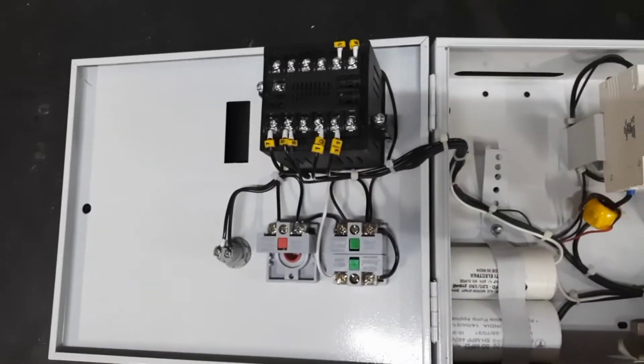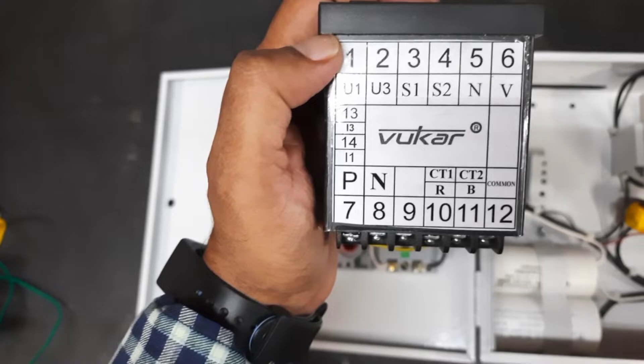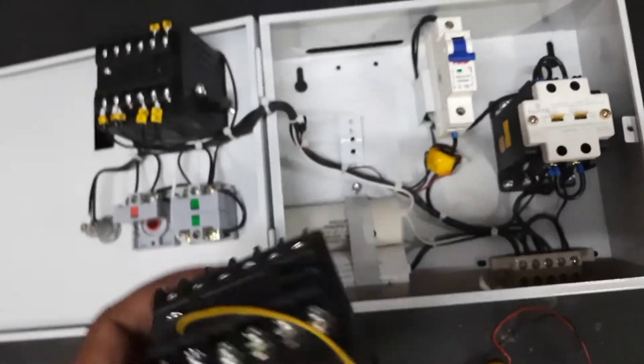Here the meter is given. In this meter you can see terminal seven and eight. That is phase and neutral. So you need to connect terminals seven and eight with the phase and neutral.